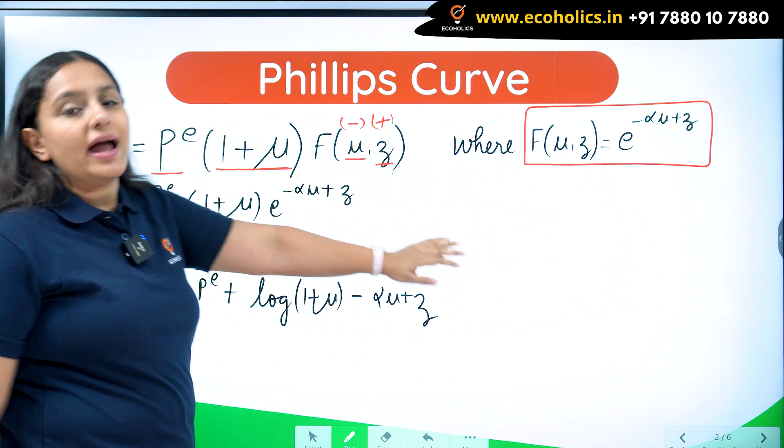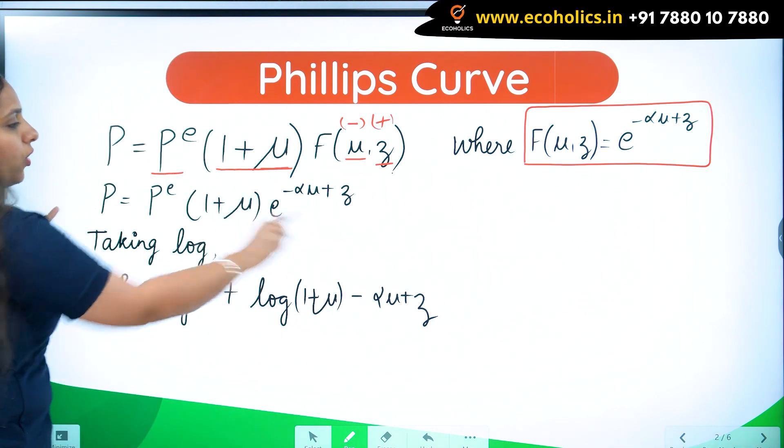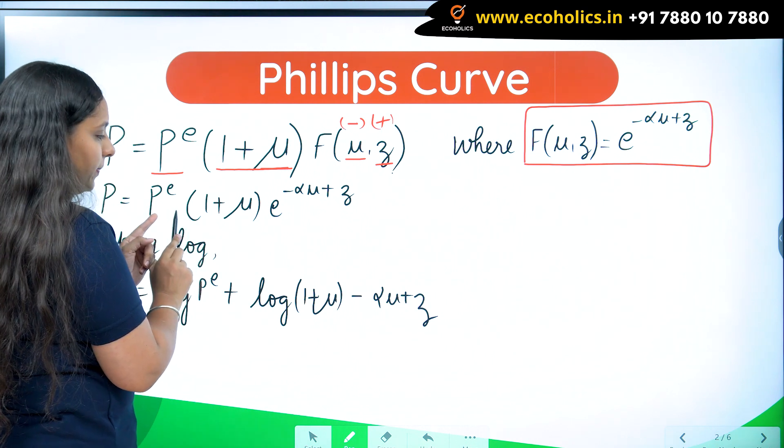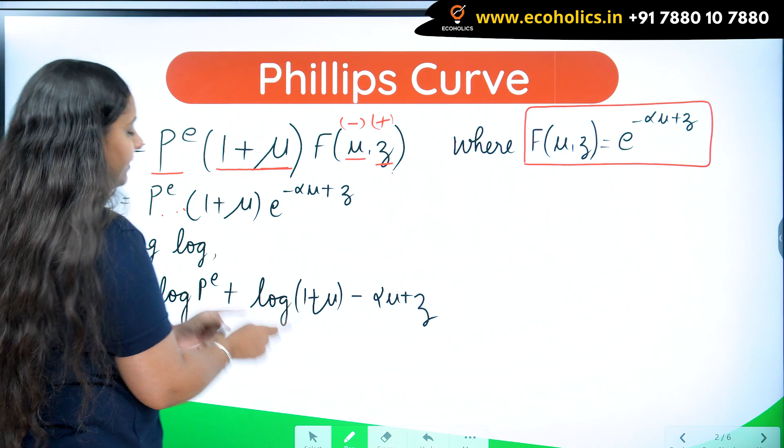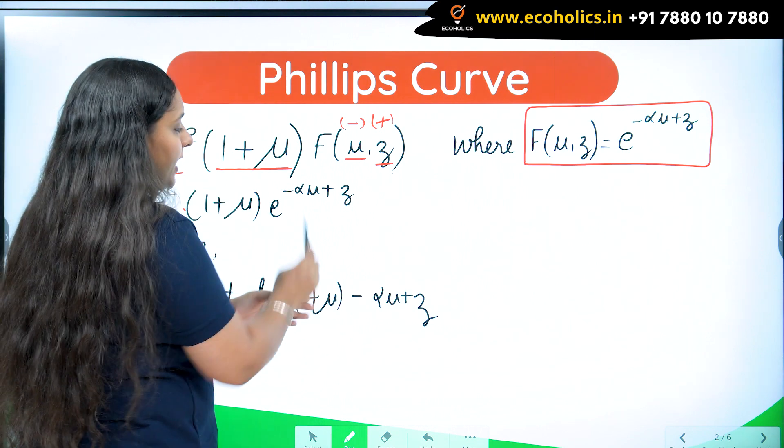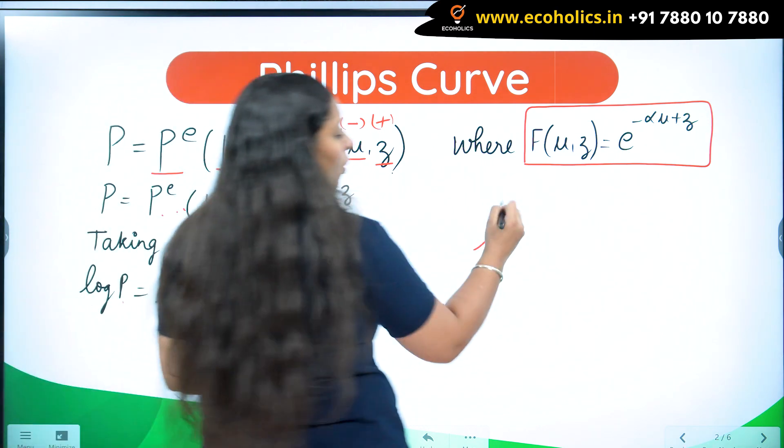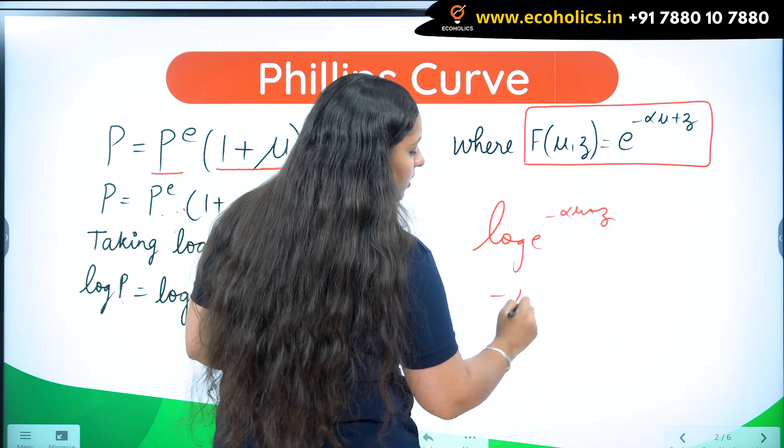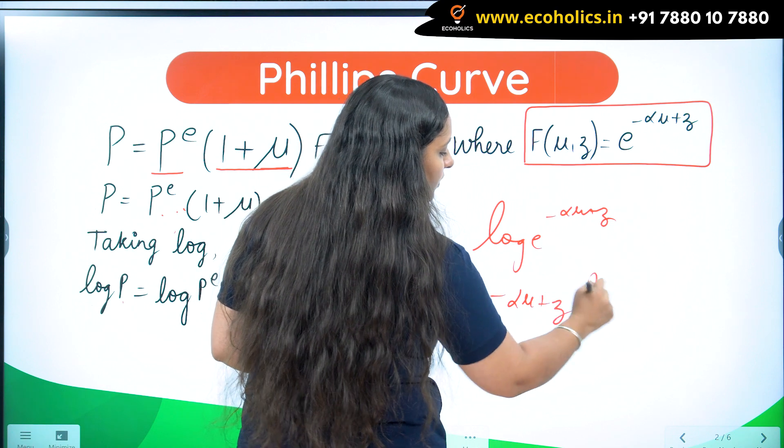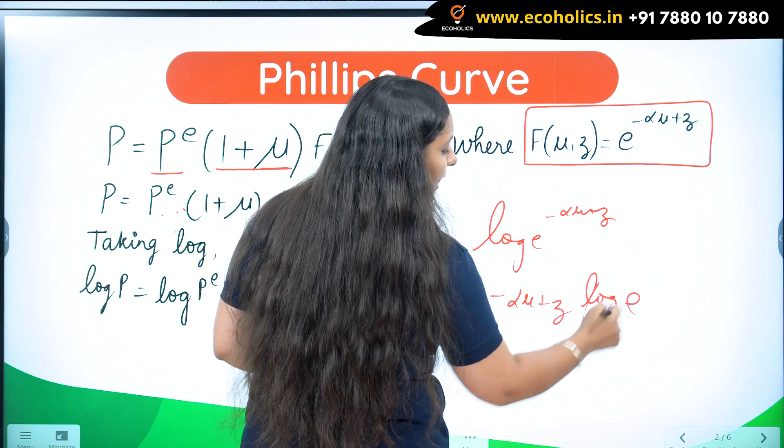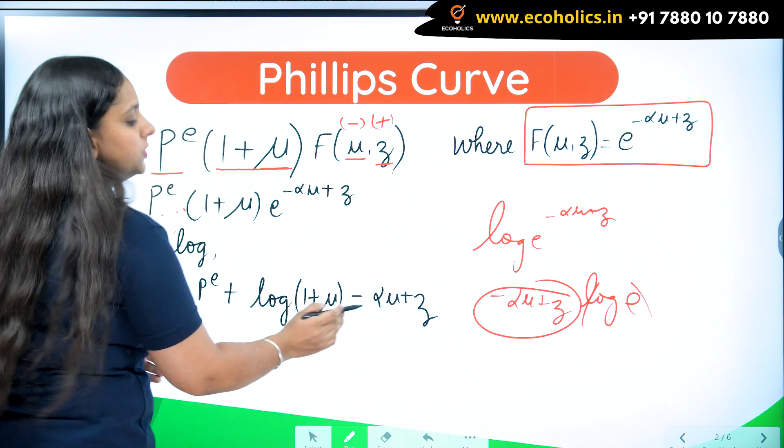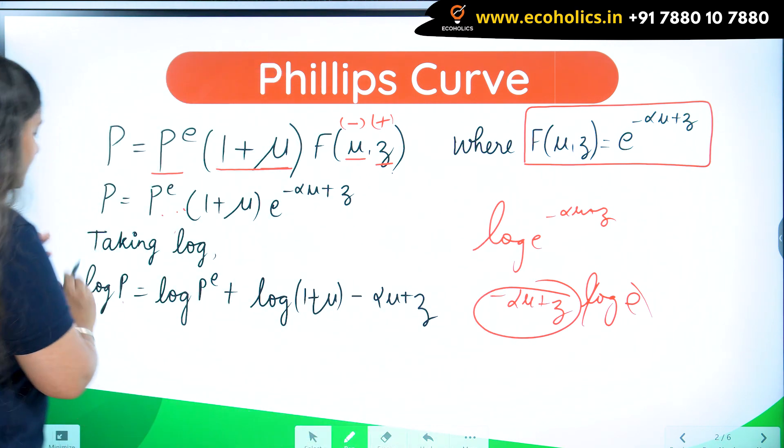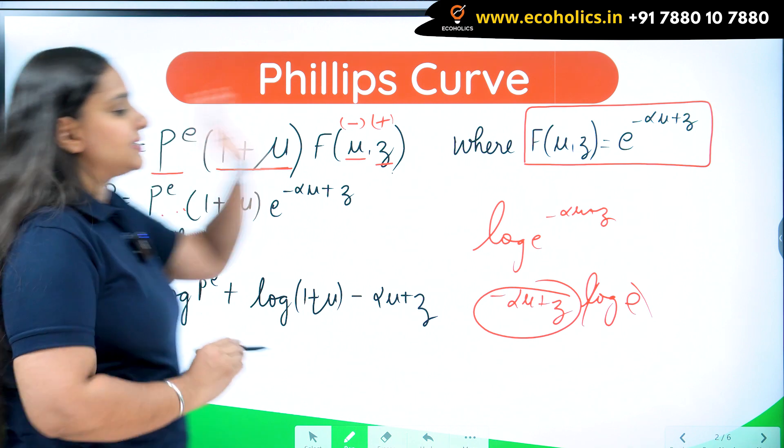I have substituted the value of this function. To solve this further, I have to take log. Taking log on both sides: log P equals log PE plus log(1 plus mu). When we take log, they get added. When you have something in power, the power comes in front and you are left with log E. Since log and E cancel each other out, I am left with just this term.